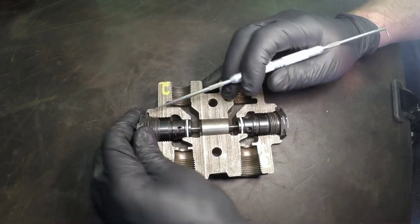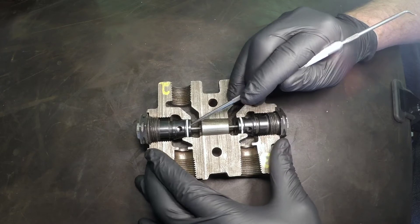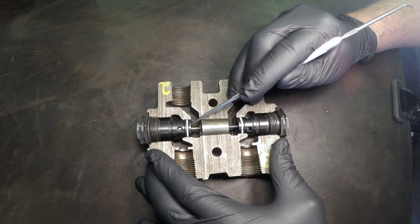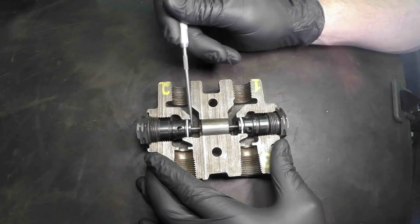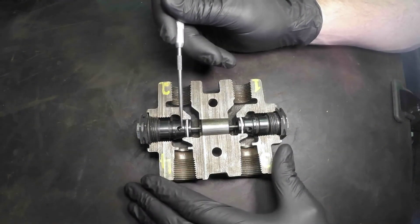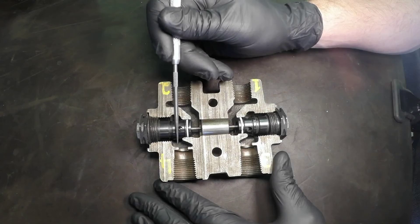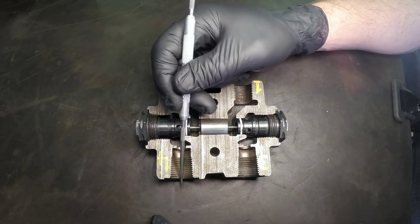So if we just sort of rotate this housing here so we can see, we can see it opens up a check ball. Now when it opens up the check ball, because pressure is created by the restriction here, it opens up the check ball and it delivers that oil to the rod end of the cylinder.